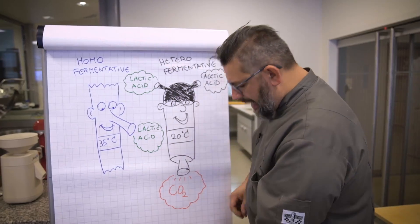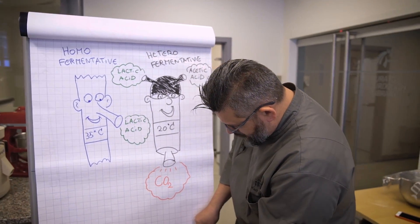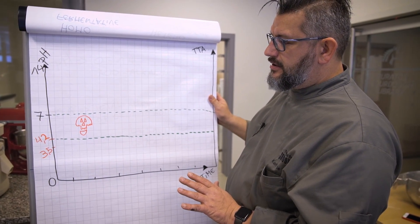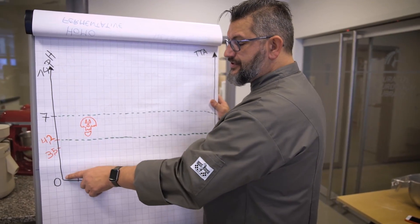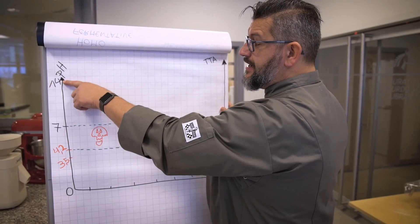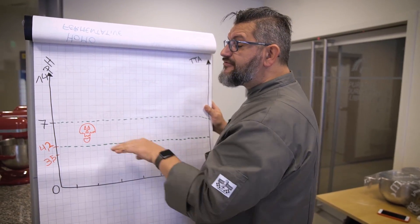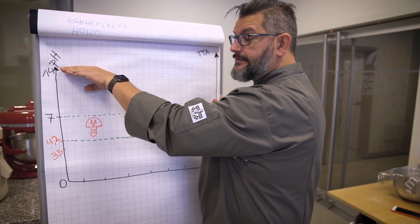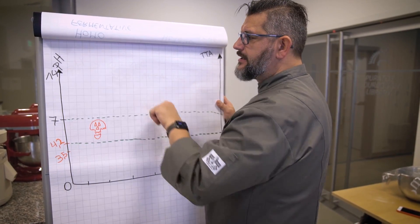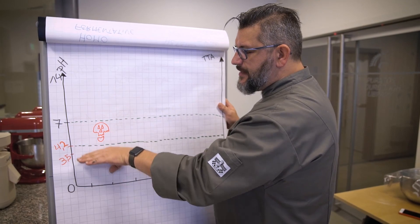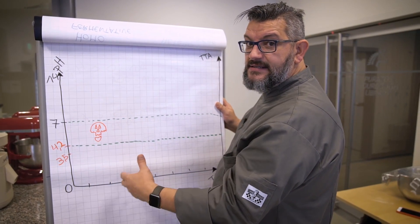Now, how does that convert into a graph? Here, we have the axis with the pH, which goes from 0 to 14. Everything that is above 7 and between 14 is alkaline or is base. Everything that is below 7 is acid or sour.